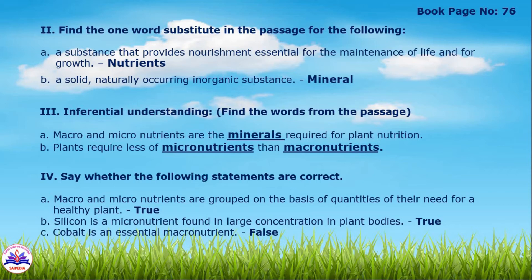Roman numeral 3 – Inferential Understanding: fill in the blanks using the passage. First: macro and micronutrients are the minerals required for plant nutrition. Second: plants require less of micronutrients than macronutrients.